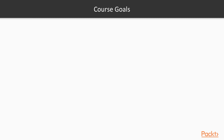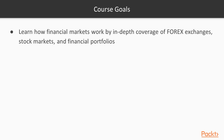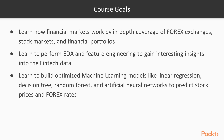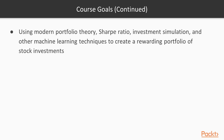What are some of the goals we are looking to achieve from this course? We will learn how financial markets work through in-depth coverage of forex exchanges, stock markets and financial portfolios. We will learn how to perform exploratory data analysis on financial data, do feature engineering to gain interesting insights and get the best possible features. We will also learn to build optimized machine learning models — linear regression, decision tree, random forest, and artificial neural networks — to predict stock prices and forex rates. Then we will use modern portfolio theory, Sharpe ratio and investment simulation to create a rewarding portfolio of stock investments.